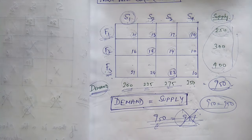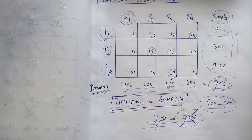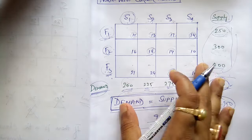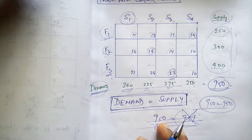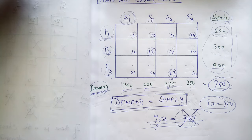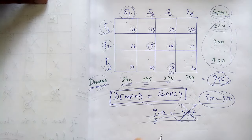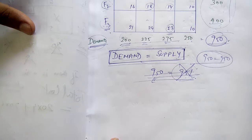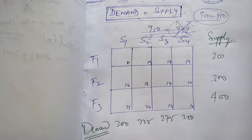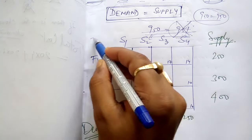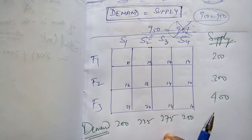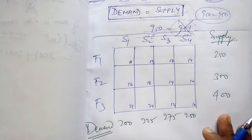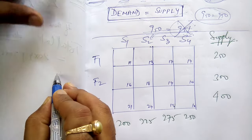Now let's try to solve the problem to find the minimum cost of transportation. Let's use the Northwest Corner Method. What does the Northwest Corner Method tell us? The name suggests the northwest direction — if this is north and this is west, then northwest is this top-left portion of the table.